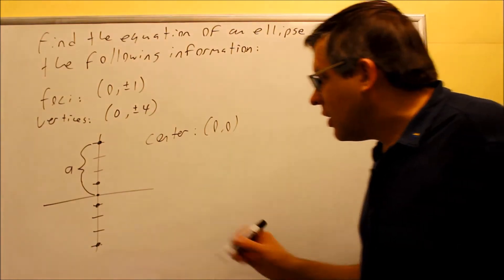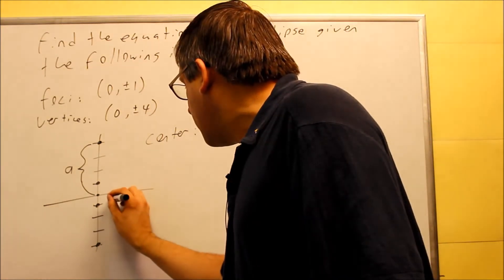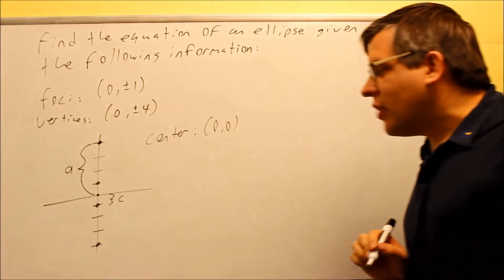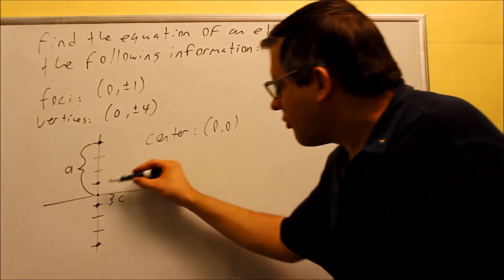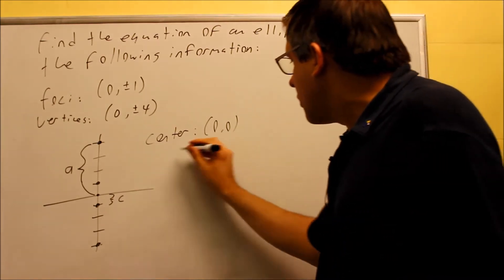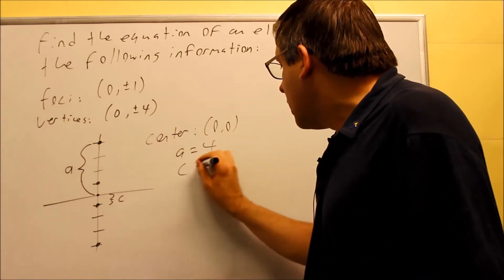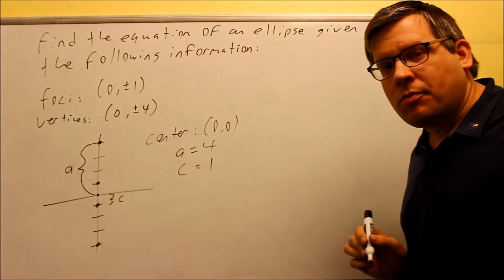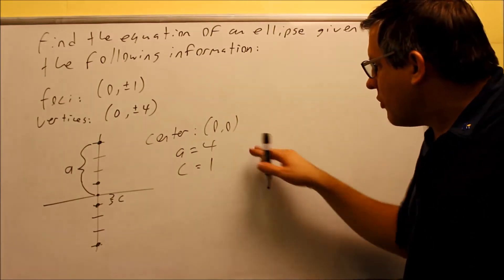I also know this little distance here. This is the c value. The c value is the distance from the center to the foci. So based on this, I have center at (0, 0). I know my a value is equal to 4 and my c value is equal to 1. So now I have that piece of information.